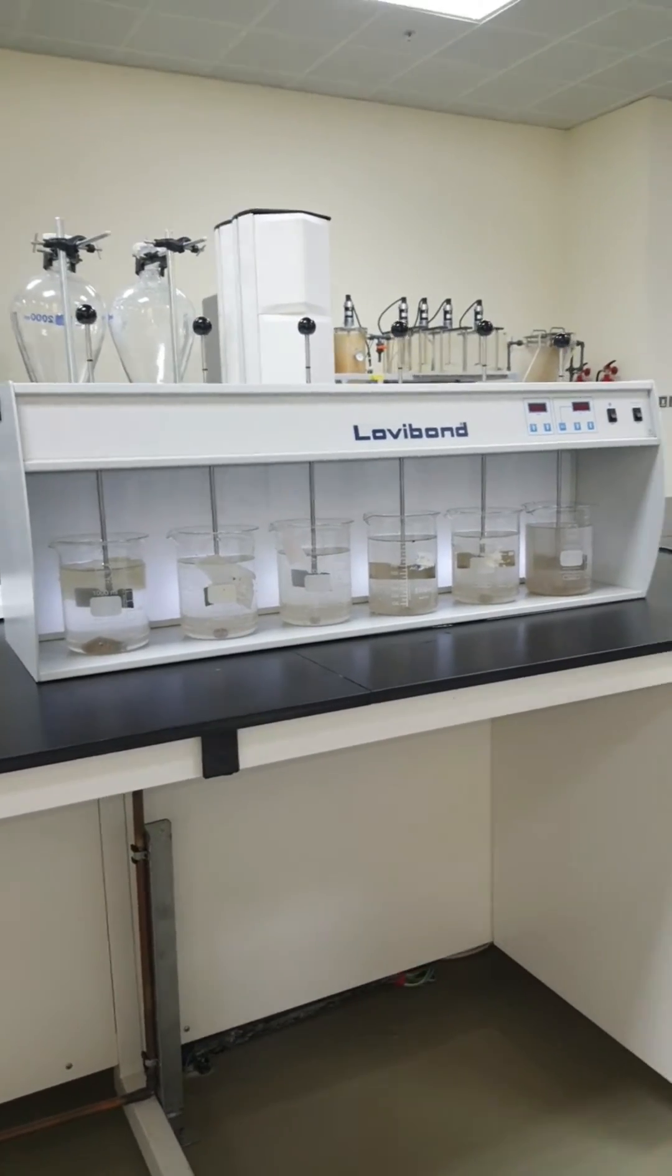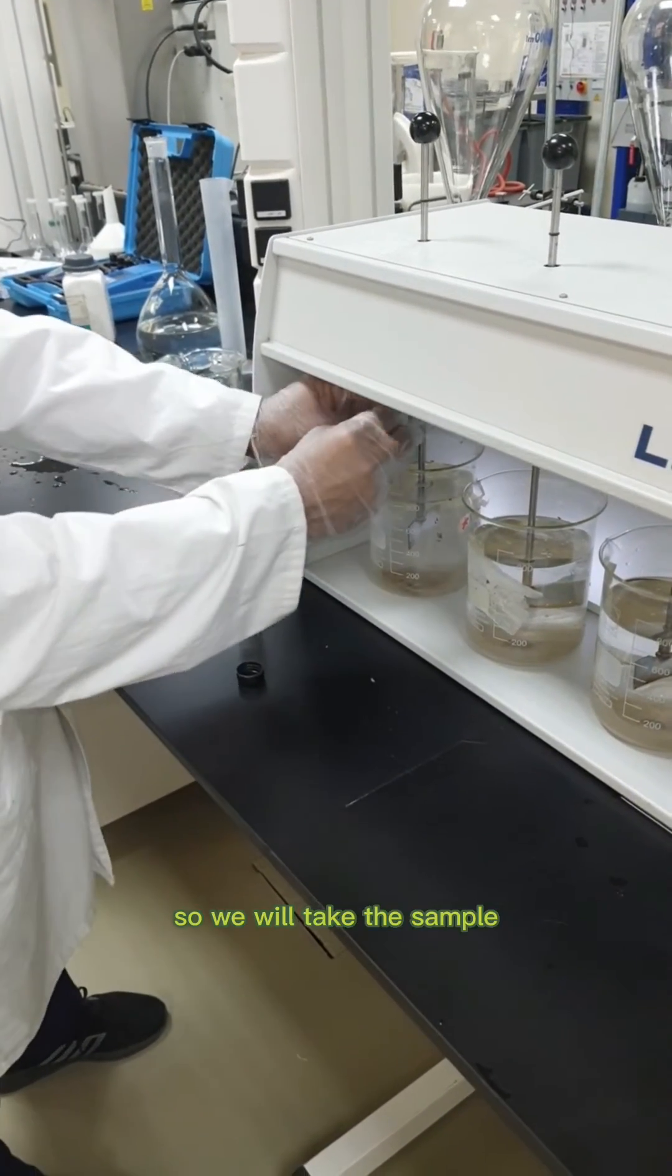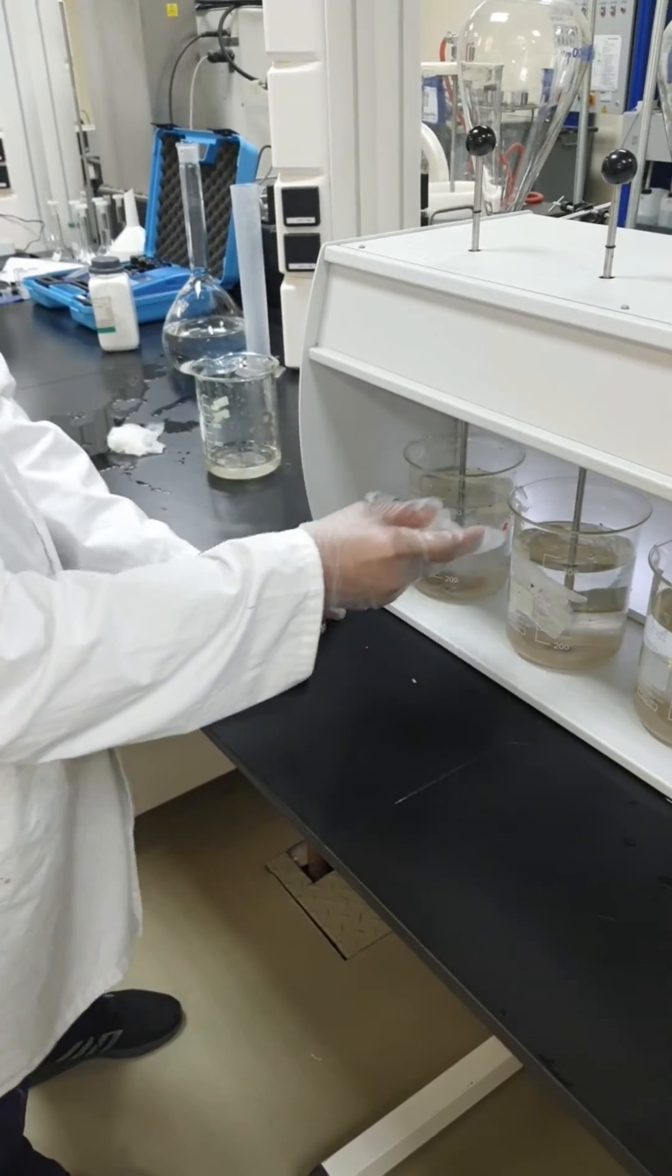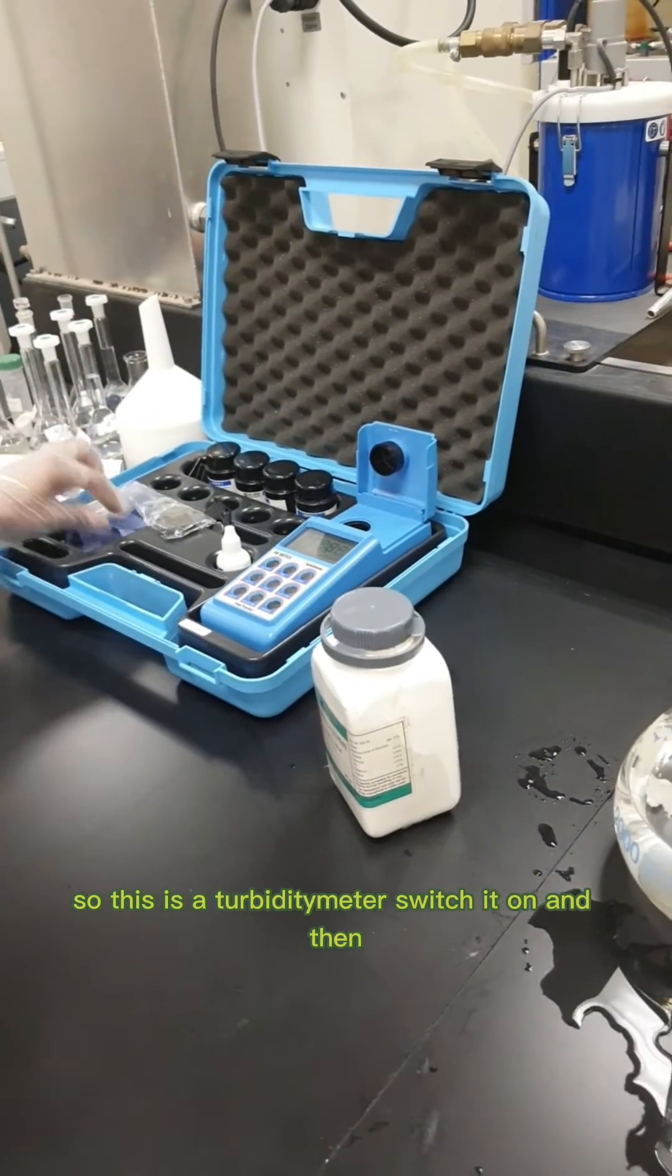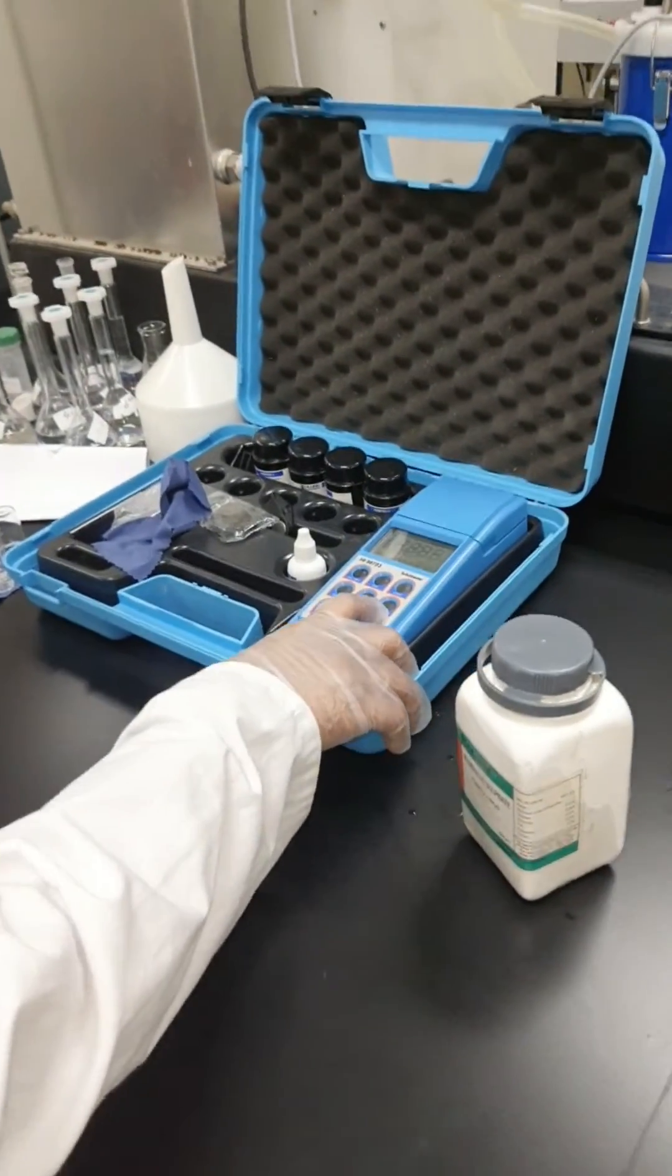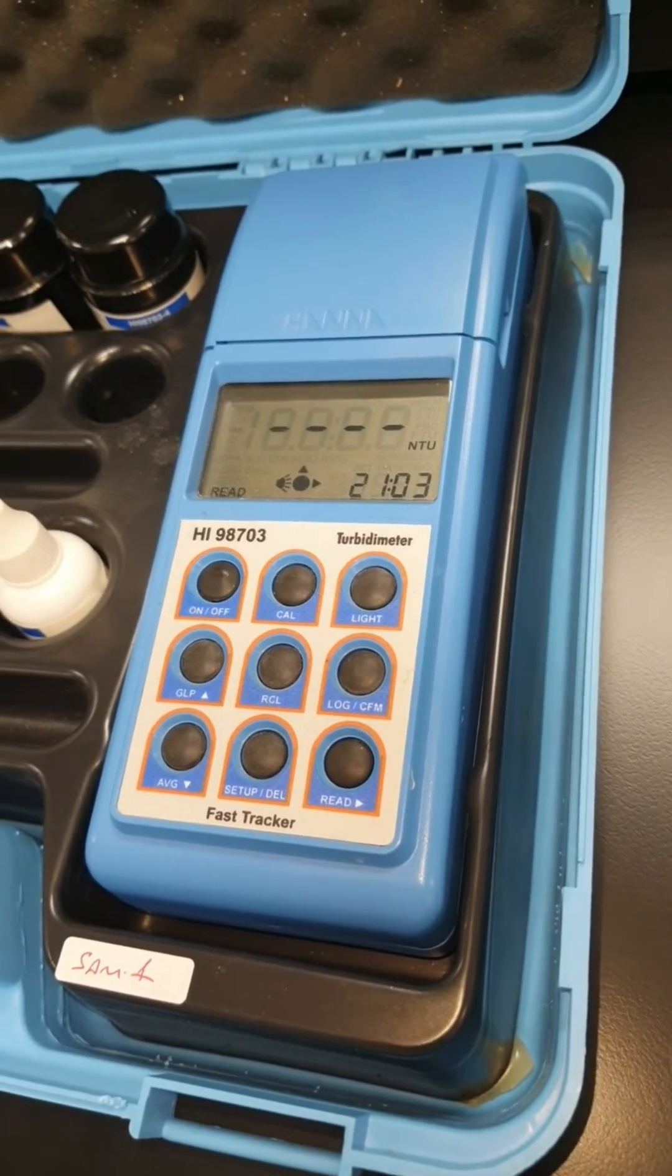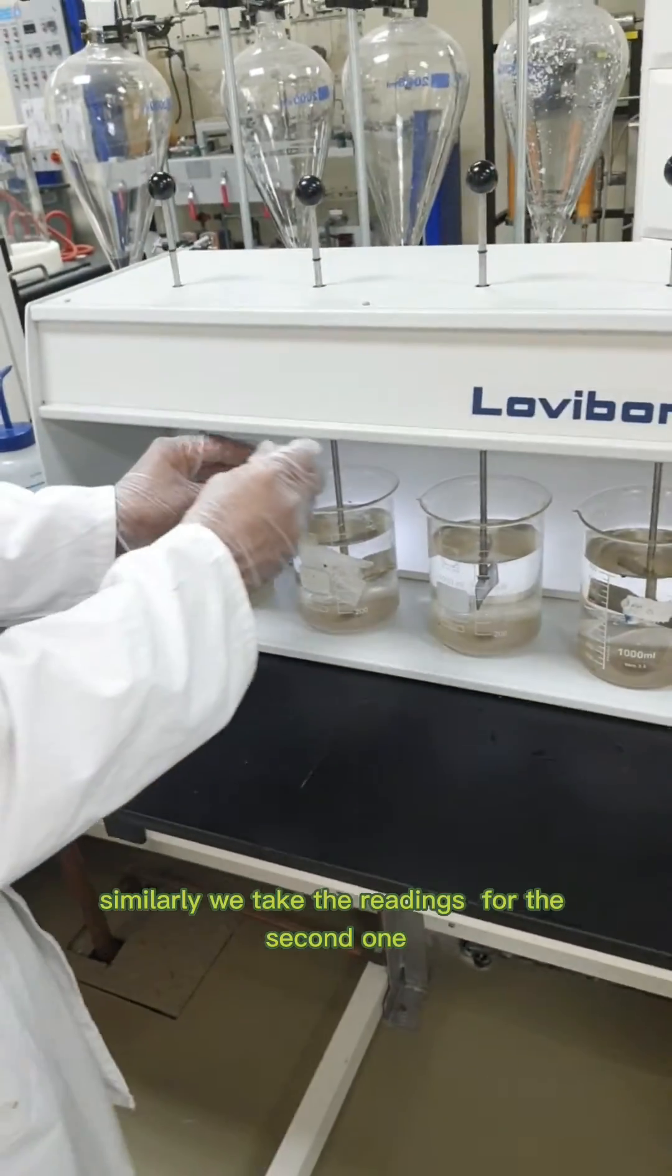Now we will take the samples. This is our reference one. We will take the sample carefully so the liquid is not disturbed. Switch it on and take the reading. This is around 47.4 NTU. We will take the turbidity for the second one.